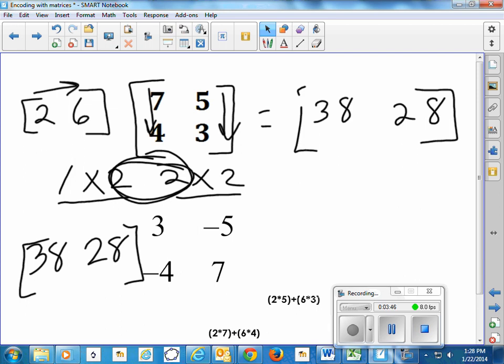So if we have 38 times 3, and 28 times negative 4, so 38 times 3 and 28 times negative 4 for the first location. We have those two numbers.